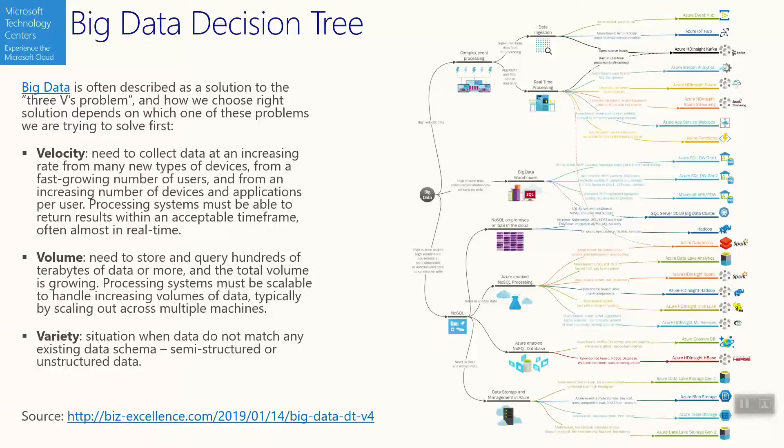The third V is high variety of data, which means that we are trying to process not only structured data, but also different formats like semi-structured data, CSV files, video files, and so on — essentially unstructured data.